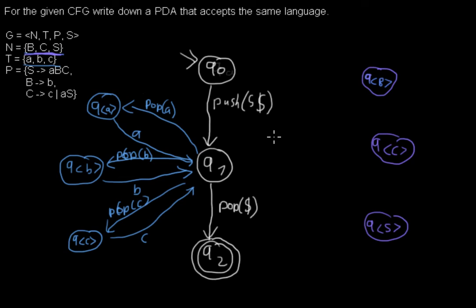And to every one of those three states there is a transition which pops those symbols from the stack. So here's one that pops B, one that pops the C, and one that pops the S. And now we add some transitions depending on the rules.